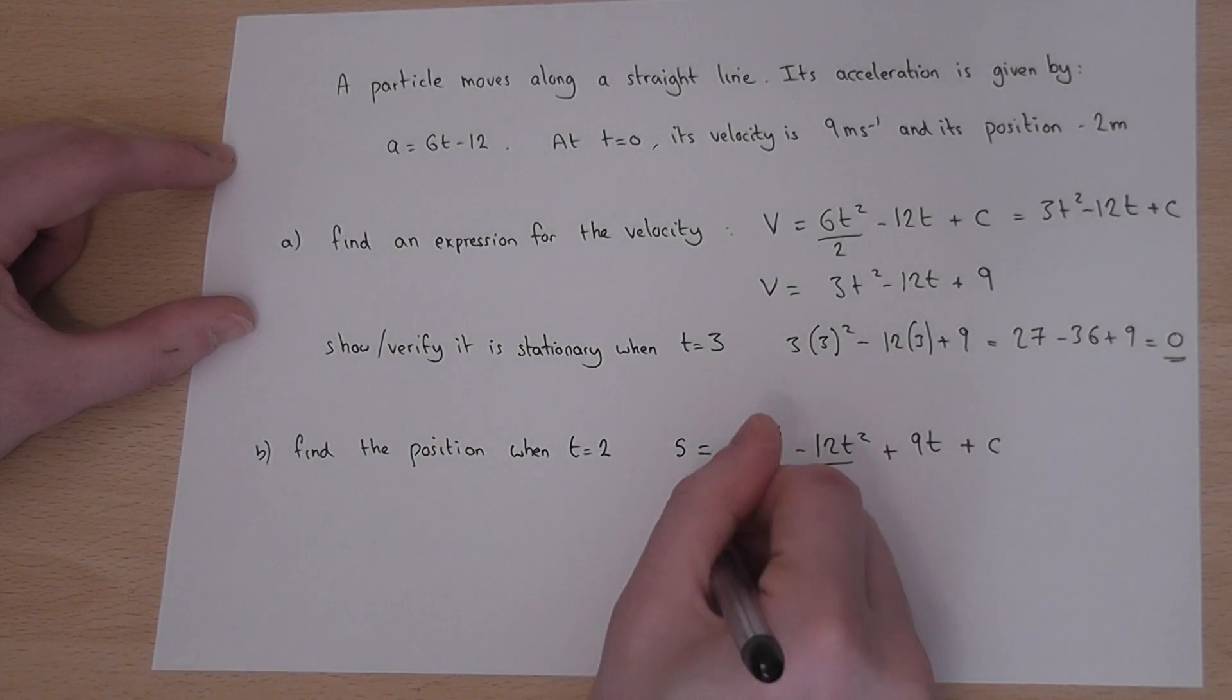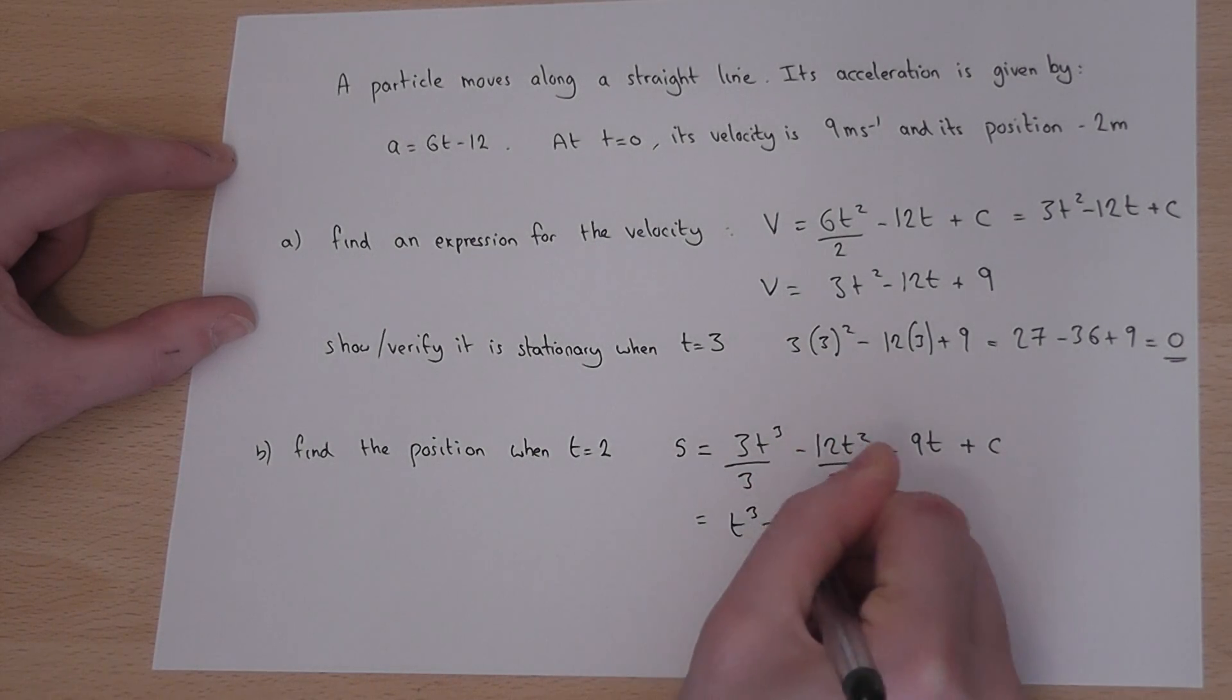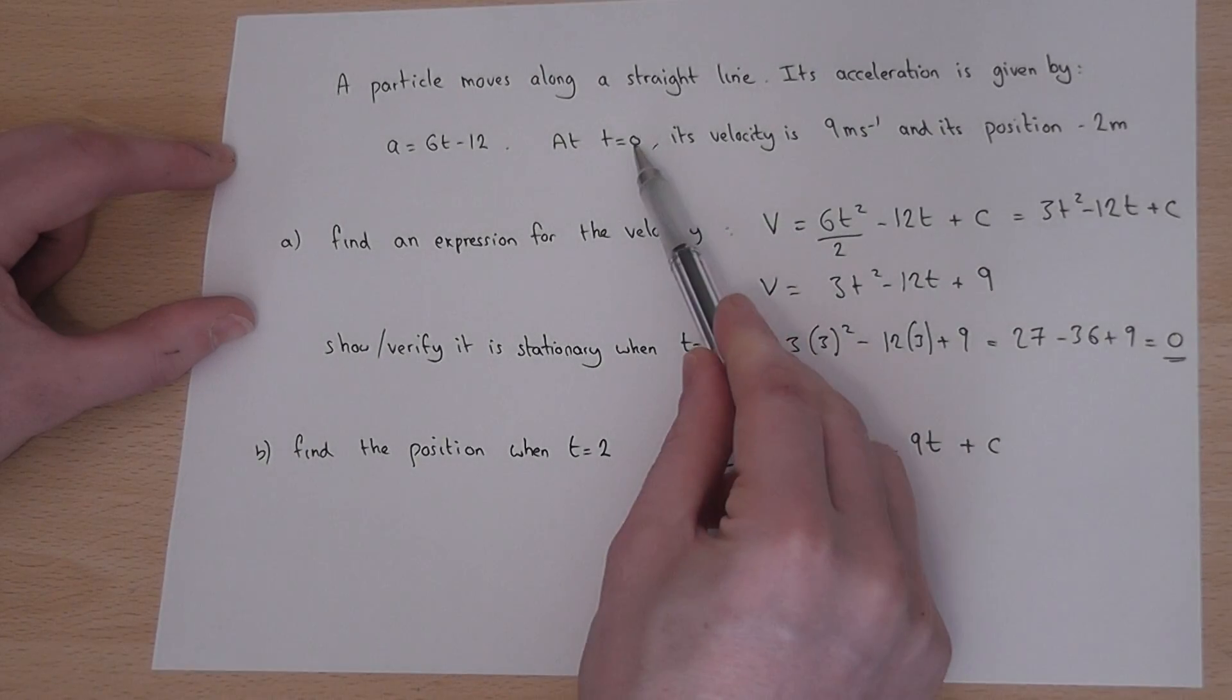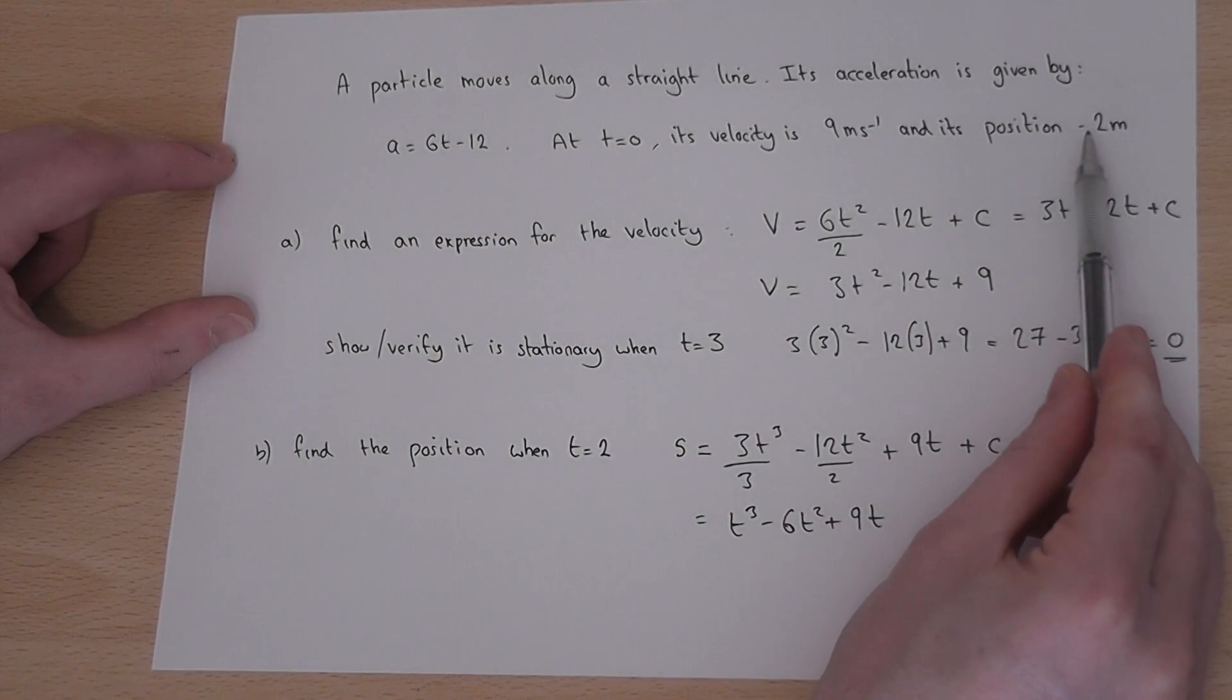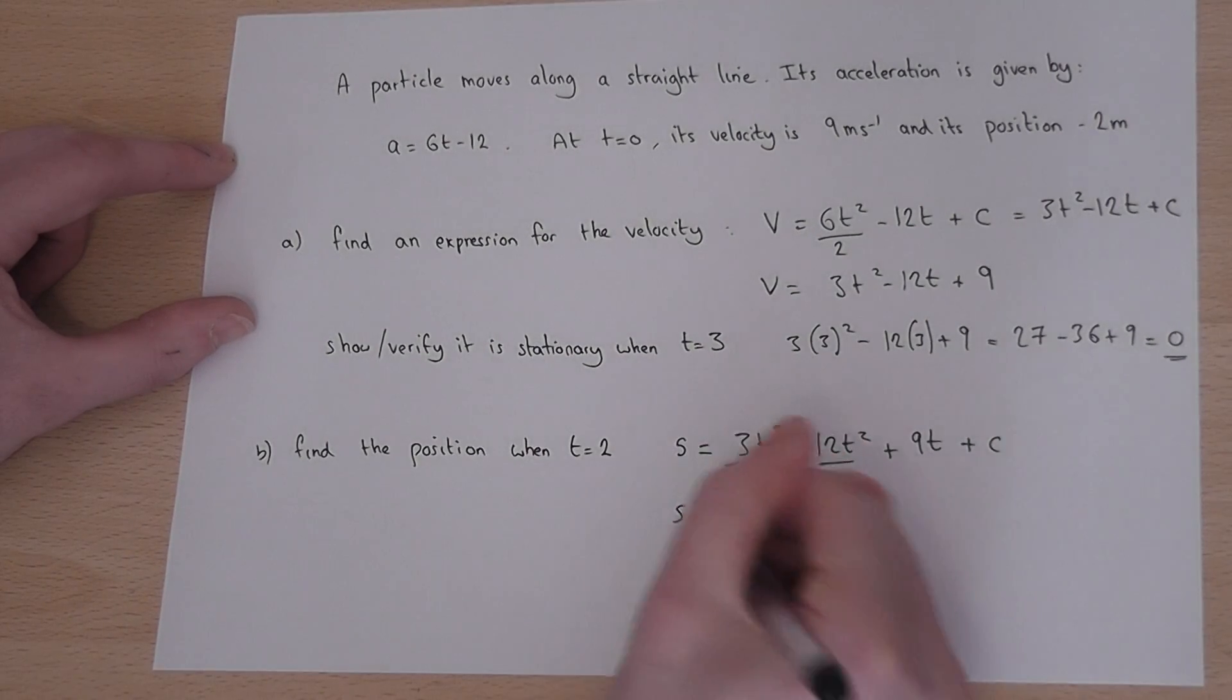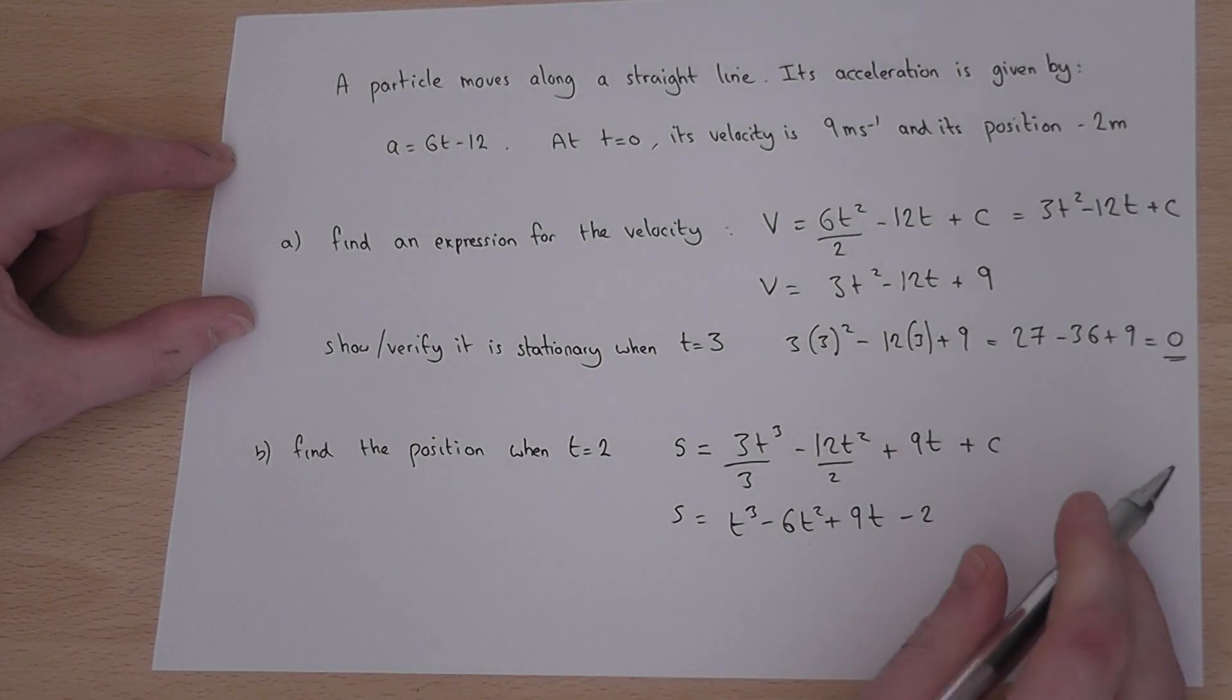Which becomes t cubed minus 6t squared plus 9t. Now initially when t is 0, the position is minus 2. So when t is 0, s must equal minus 2. So c must equal minus 2 to give the correct initial position.